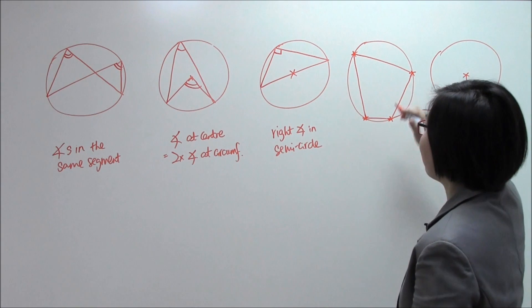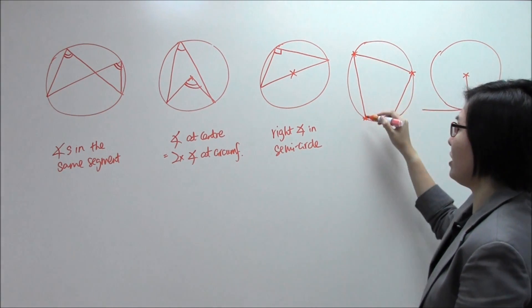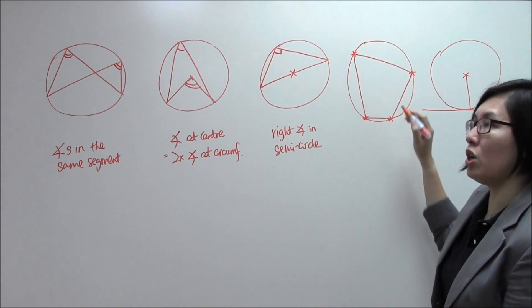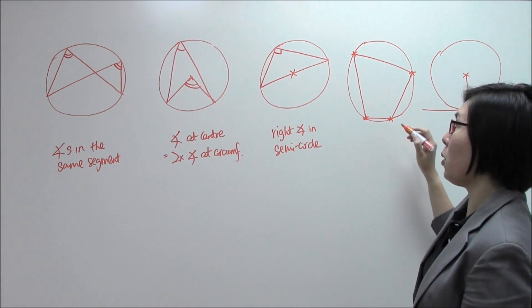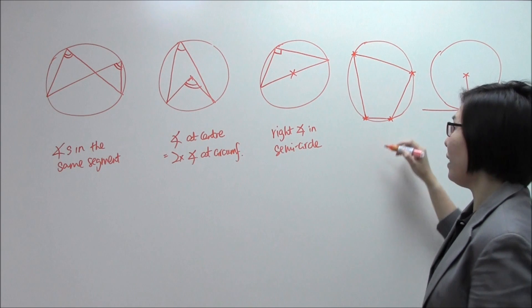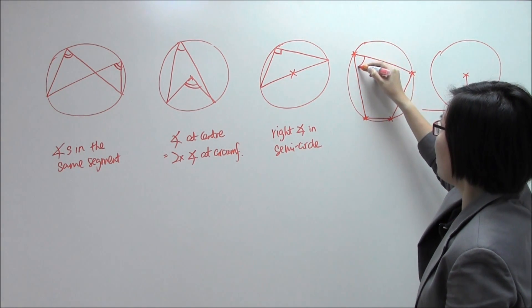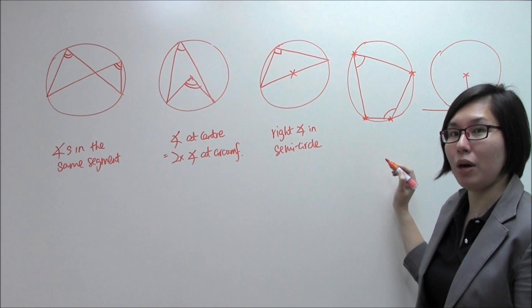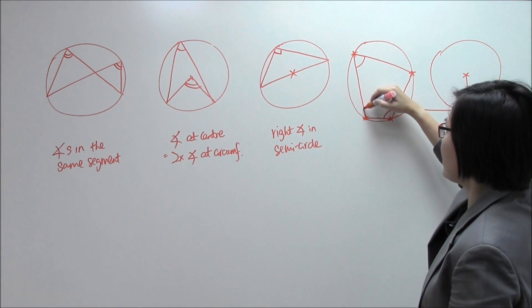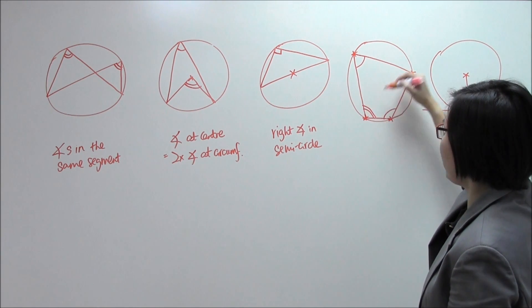Fourth property. Now, you have seen over here I've actually drawn a four-sided figure inside this circle. It has a name called cyclic quad.